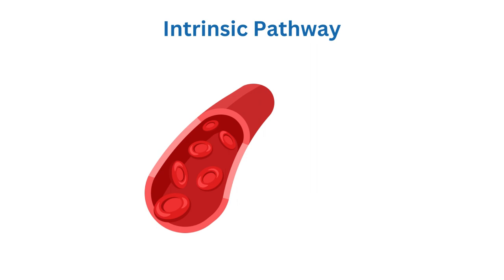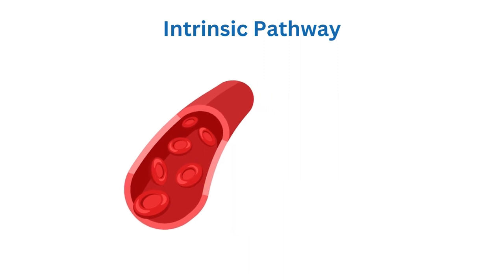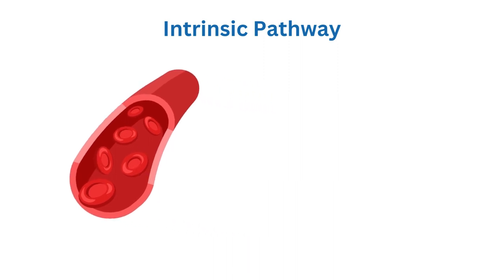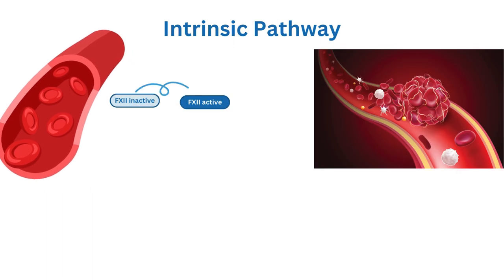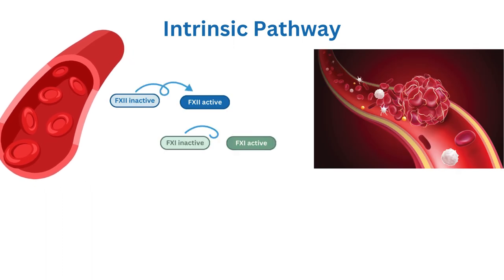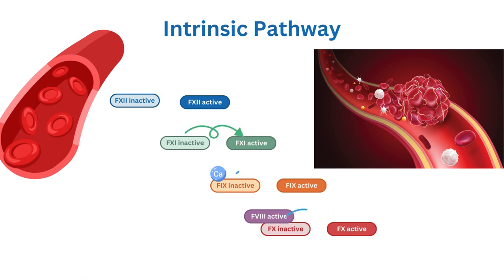The intrinsic pathway is initiated by damage inside the blood vessel itself, exposing collagen and activating platelets. The exposed collagen activates Factor 12, or Hagemann factor, which then activates several other steps, of which activation of Factor 10 is the last step.